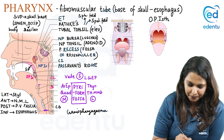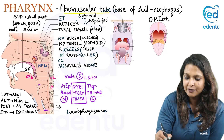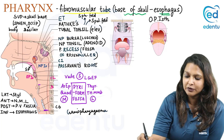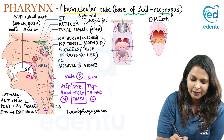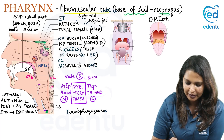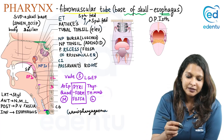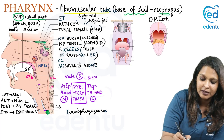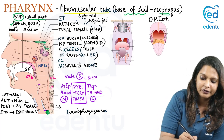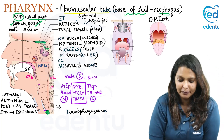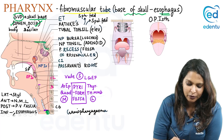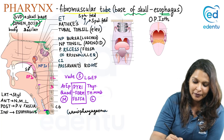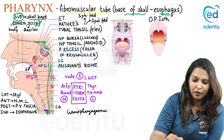Pharynx is a fibromuscular tube that extends from the base of skull to the esophagus. Superiorly it is related to the skull base — specifically the body of sphenoid and the basilar part of the occipital bone. Inferiorly it is related to the esophagus. Posteriorly it is related to the pre-vertebral fascia and then to the vertebral bodies.